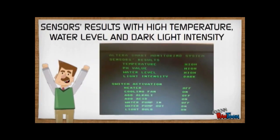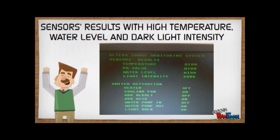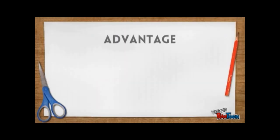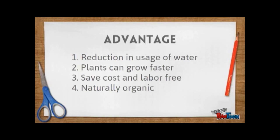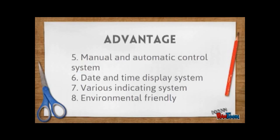The next picture shows the sensor result with high temperature, water level, and dark light intensity. There are many advantages of this monitoring system. There will be a reduction in usage of water and the plant can grow faster. It can save cost and it is labor free. It has manual and automatic control system, date and time display, and various indicating systems. And lastly, it is environmentally friendly.